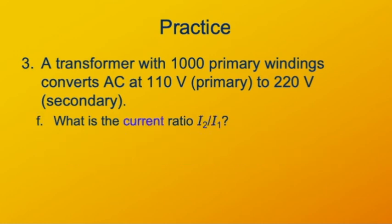What about the current ratio, I2 to I1? The current ratio has to be the reciprocal of the voltage ratio. The voltage is twice as high in the secondary as the primary, so the current has to be twice as high in the primary as the secondary. So I2 to I1 should be 1 to 2, or 1 half.